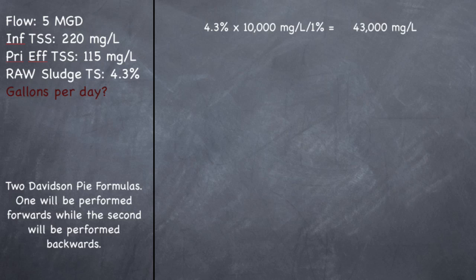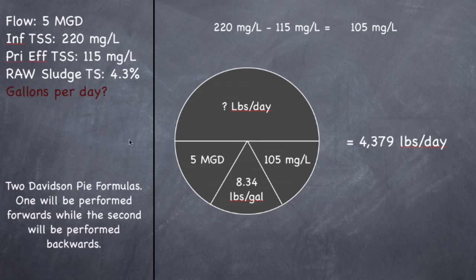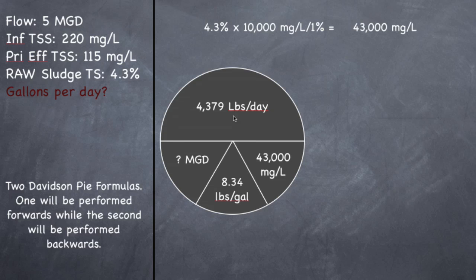And this is the concentration we're going to use in our backwards pi. So go ahead and put that pounds into your pi already. So 4,379 pounds, which we got from here, remember, 4,379 pounds divided by the concentration of that sludge, which is 43,000 mg per liter divided by 8.34 pounds per gallon should give you a flow, million gallons per day.